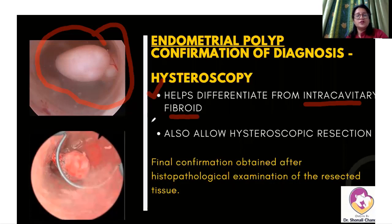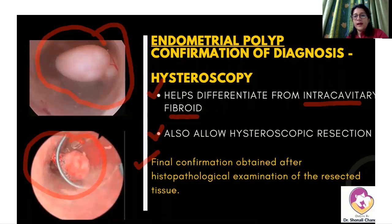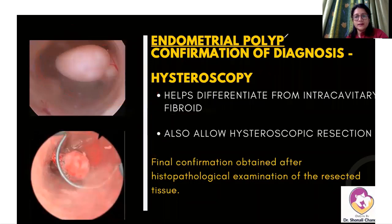The other very big advantage of hysteroscopy is that in the same sitting, we can also go for hysteroscopic resection. We will resect this endometrial polyp, take it out, and send it for histopathological examination. It is on that histopathological examination that final confirmation will arrive that yes, the tissue resected is indeed an endometrial polyp. So the final confirmation of diagnosis is done by hysteroscopy, and we can have diagnosis and treatment in the same setting.